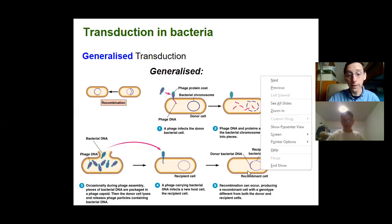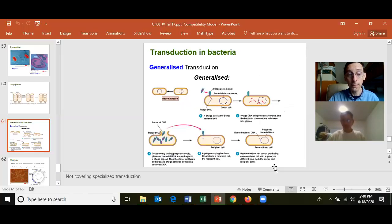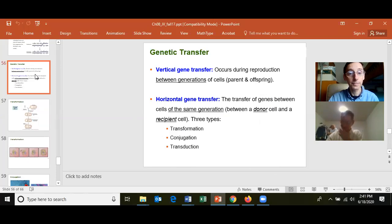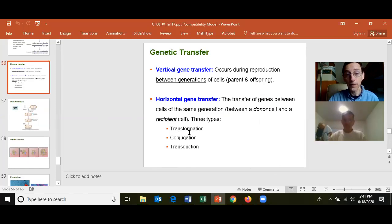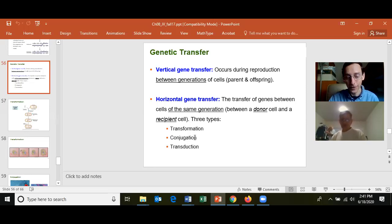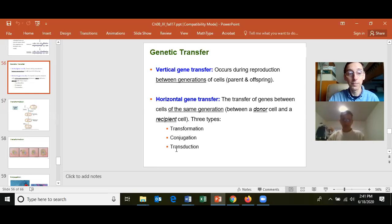This happens about 1 in 10^5 times — 10 times more frequently than spontaneous mutation. That is how the three methods of horizontal gene transfer spread pre-existing genetic information in the population: transformation, conjugation, and transduction. A cell can acquire a pre-existing gene more frequently through these three means than through spontaneous mutation, and this happens in bacterial cells all the time.